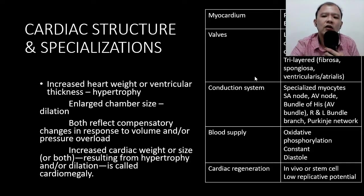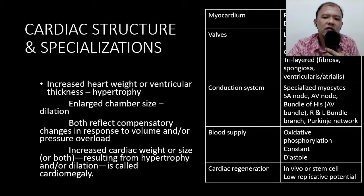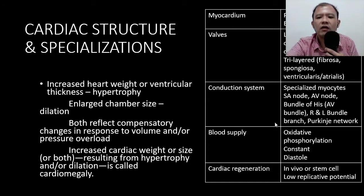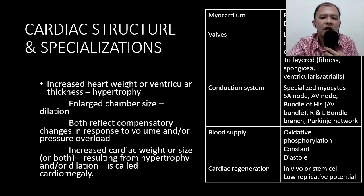The conduction system — we already know from anatomy and histology — that the heart's signals follow certain points: the SA node, AV node, down to your Purkinje fibers. The blood supply: the heart is mainly relying on oxygen as its source of power, and the pumping and blood supply of the heart has to be constant. There's no time that the heart becomes devoid of blood because it really needs blood to function.